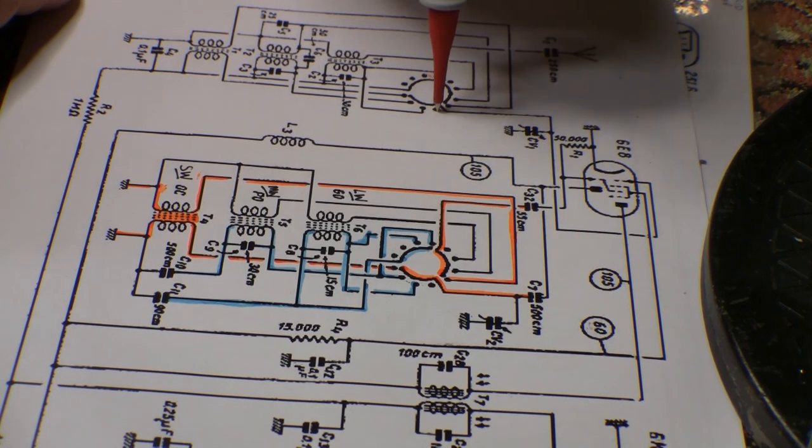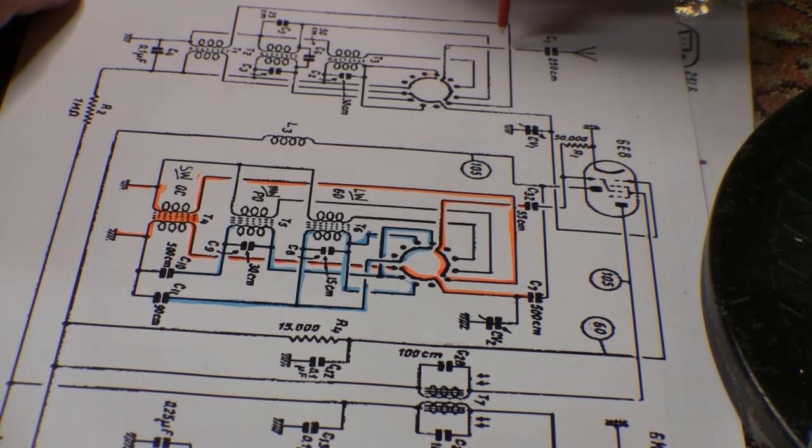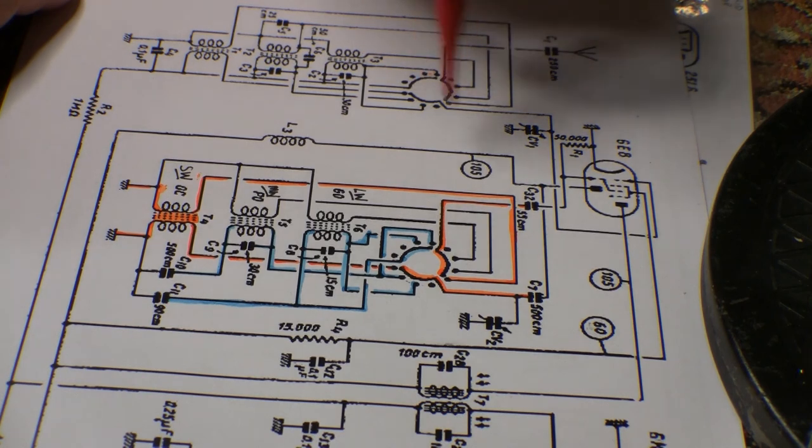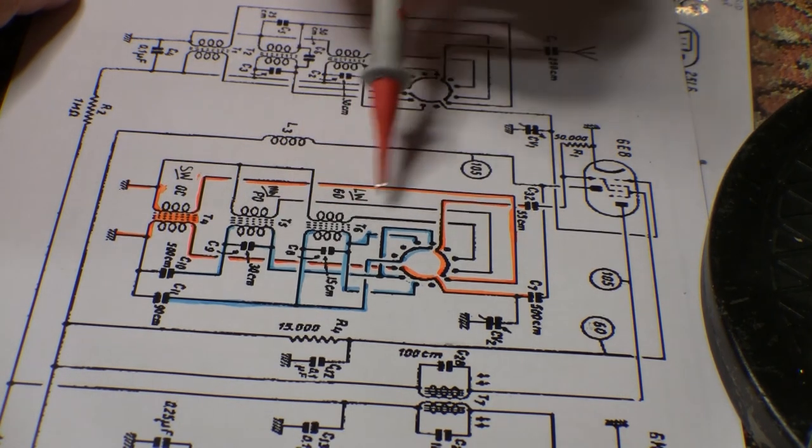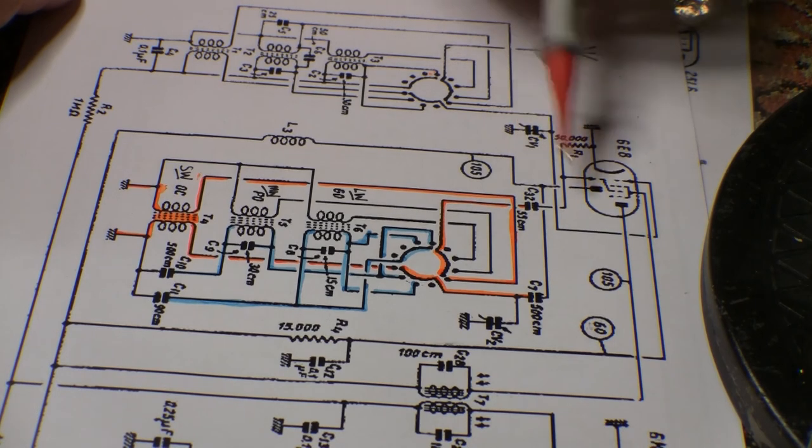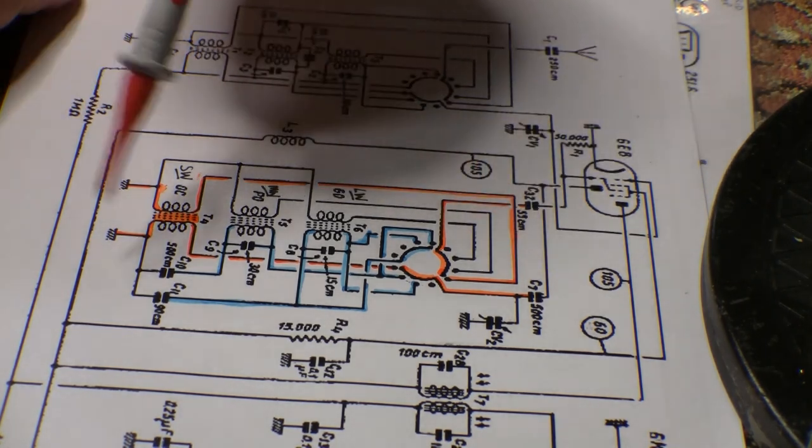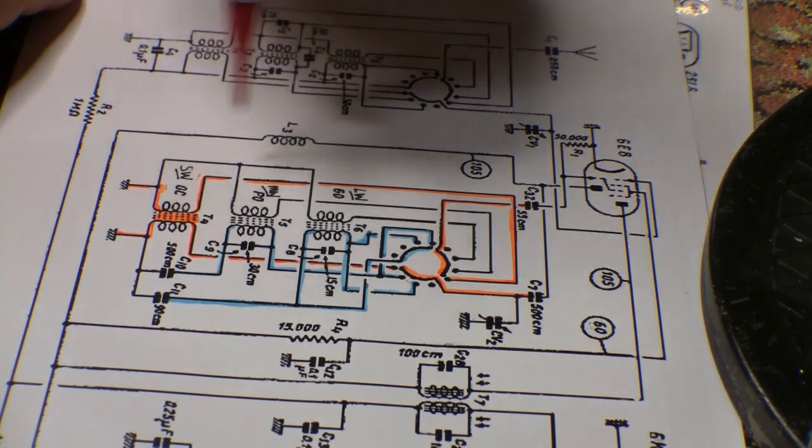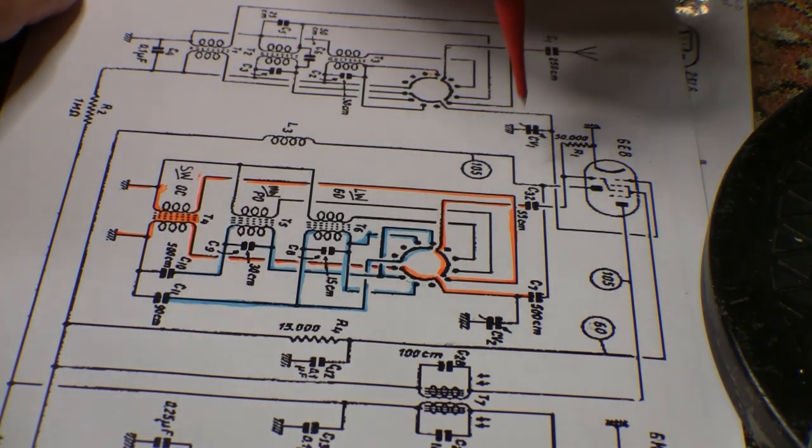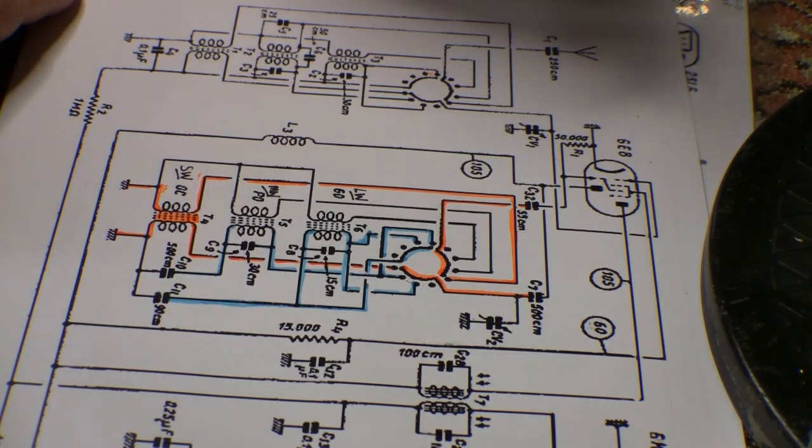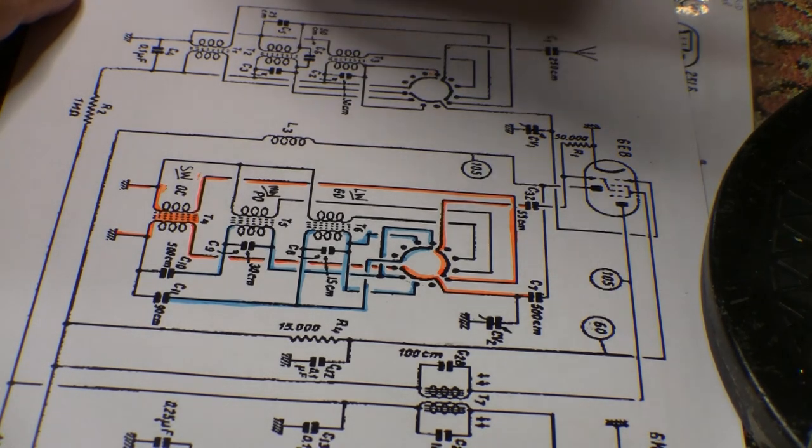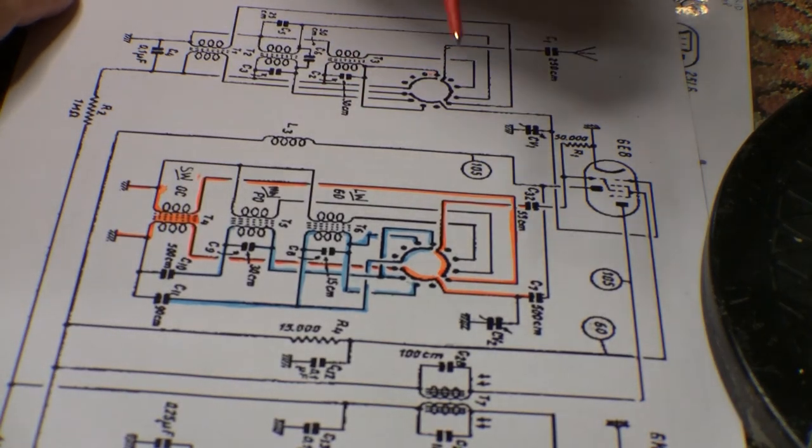One other thing I started to do was just to check all these points where they leave the wave band assembly and go to the rest of the circuitry, to check their resistances to ground, to chassis when you're selecting the different wave bands. Everything is similar except one major anomaly which makes absolutely no sense to me whatsoever.